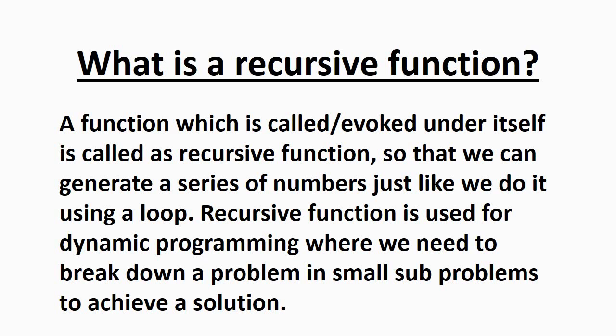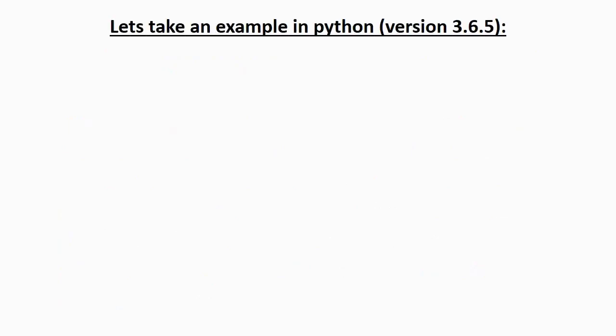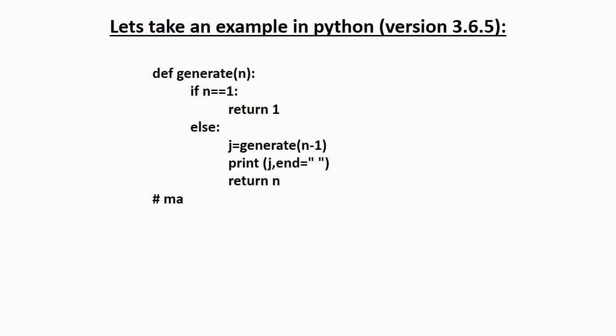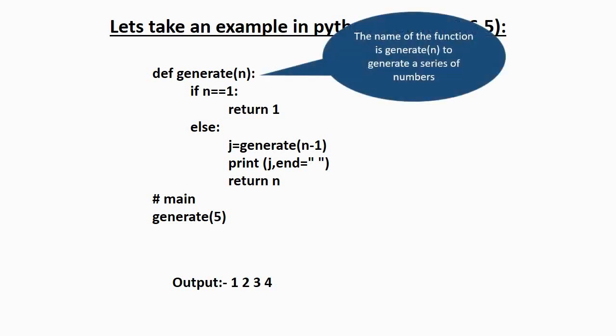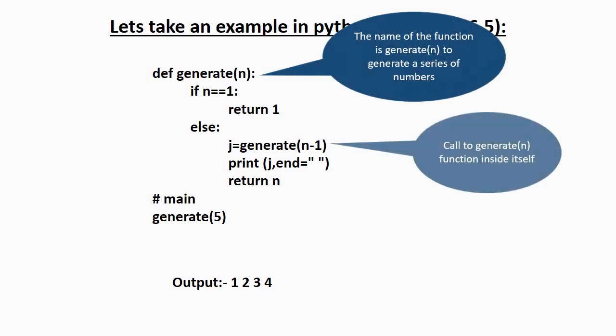We will understand this with an example. We will take a sample code — the name of the function is 'generate' and it takes a value n which is an integer value. The output is 1, 2, 3, and 4 — that's the series of numbers. So the function is named 'generate' to generate a series of numbers.